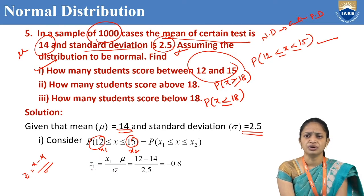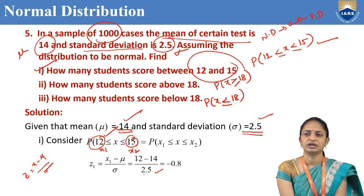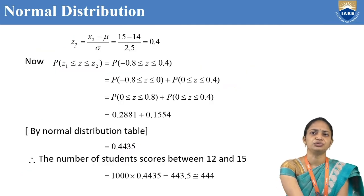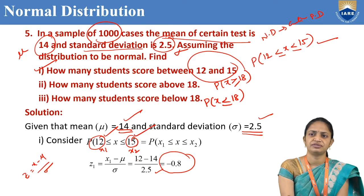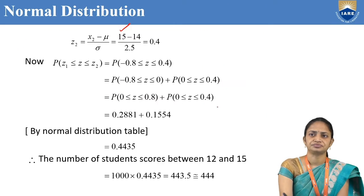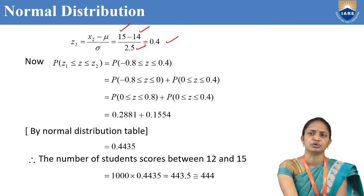Computing z1: x1 is 12, mu is 14, sigma is 2.5. So z1 equals 12 minus 14 divided by 2.5, which gives minus 0.8. For z2: x2 is 15, mu is 14, sigma is 2.5. So z2 equals 15 minus 14 divided by 2.5, which gives positive 0.4.